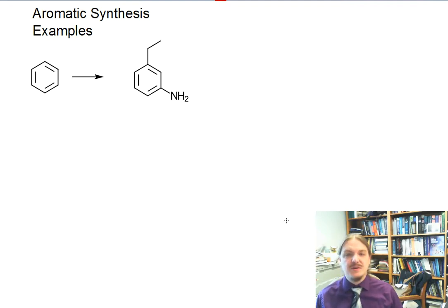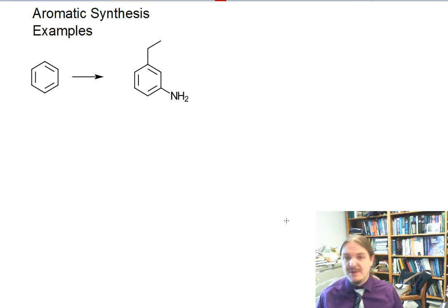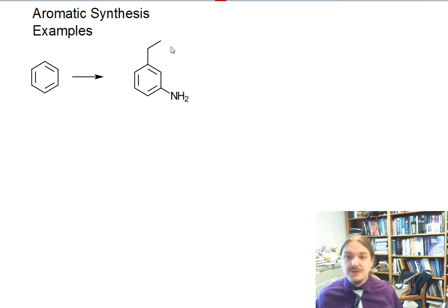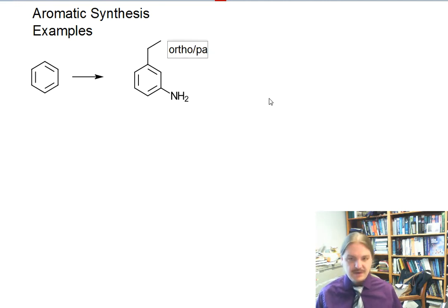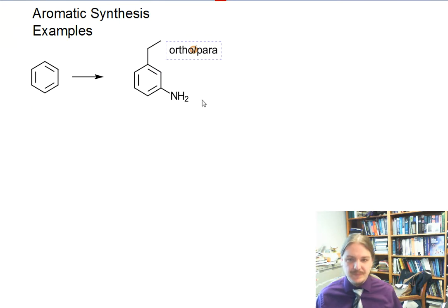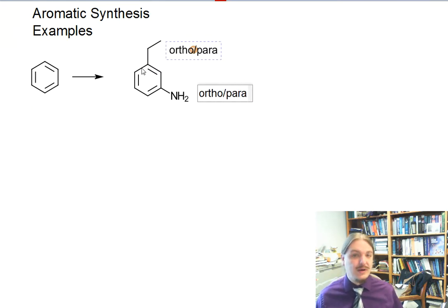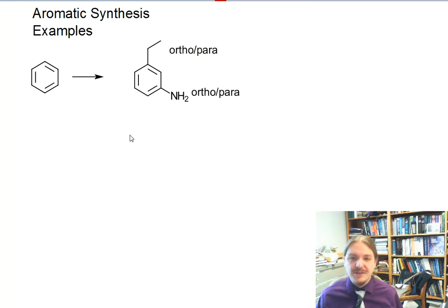In this video, I'm going to talk about some aromatic synthesis — an aromatic synthesis example using the conversion of benzene to meta-ethyl aniline. The first thing we want to do is look at what substituents we already have. The ethyl group is an ortho-para director, the nitro group is an ortho-para director, and we have a meta arrangement.